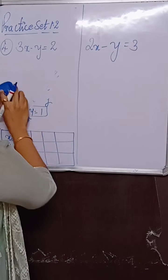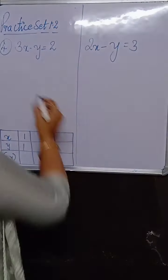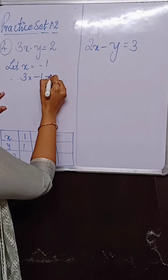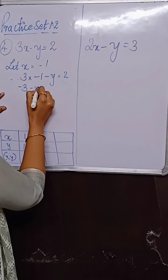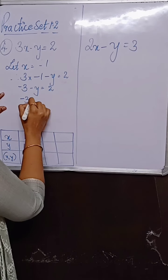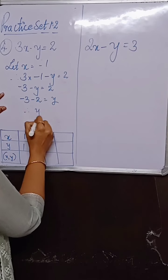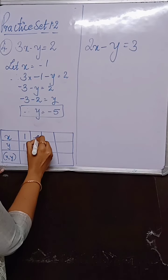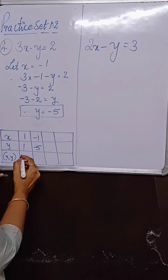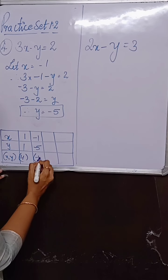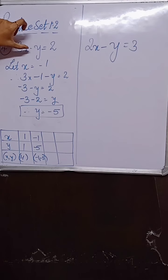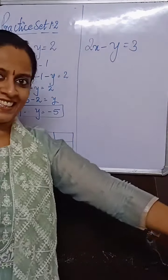Next, let us take x as minus 1. So 3 into minus 1 minus y is equal to 2, giving minus 3 minus y equals 2, so minus 3 minus 2 equals y, therefore y is equal to minus 5. When x is minus 1, you get y as minus 5. So the second ordered pair is minus 1 comma minus 5. Cross-checking: minus 3 minus of minus 5 gives minus 3 plus 5 equals 2. Correct.